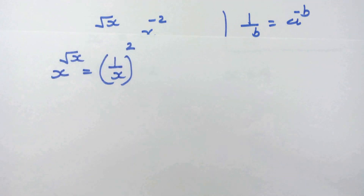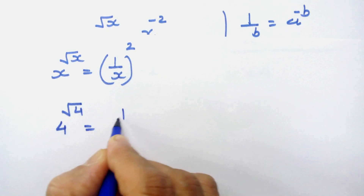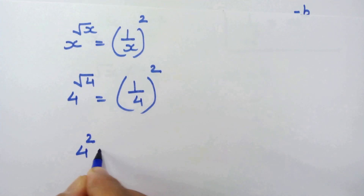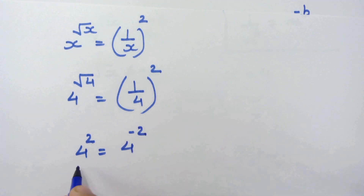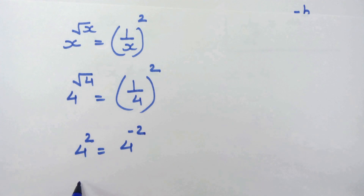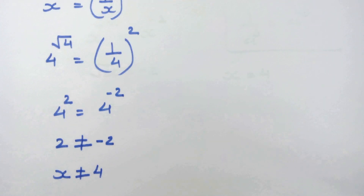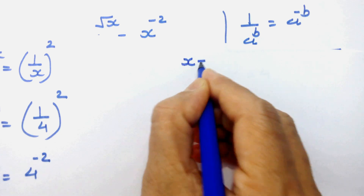We write 4 raised to square root of 4 equal to 1 upon 4 whole squared. This gives 4 squared equal to 4 raised to minus 2. The bases are the same but the exponents are not — 2 is not equal to minus 2. So x is not equal to 4. Now let's check if x equals 1.